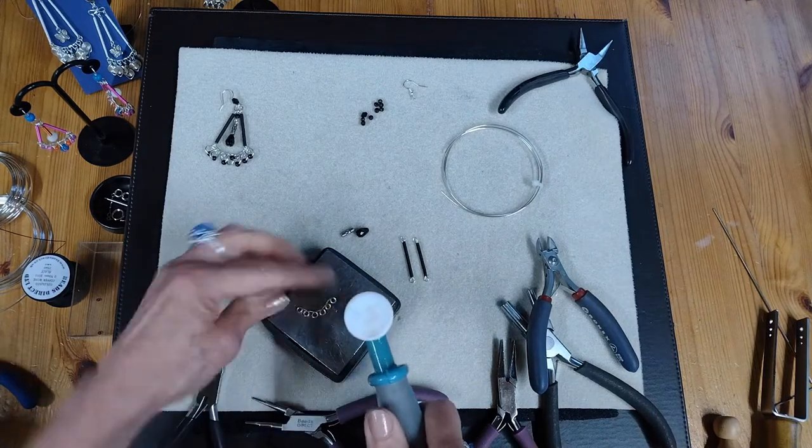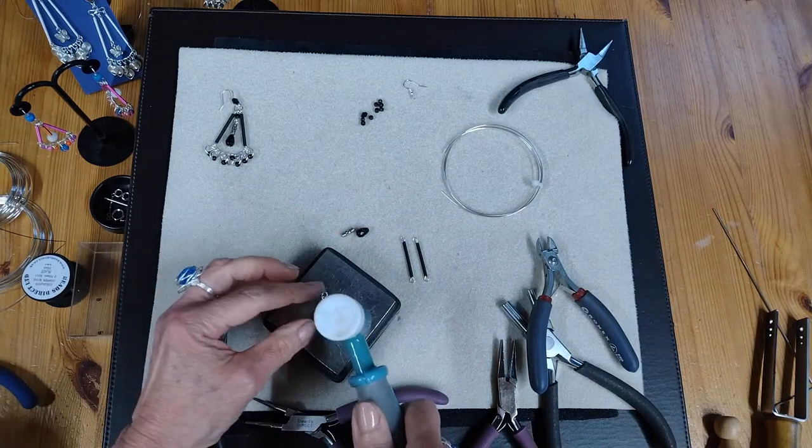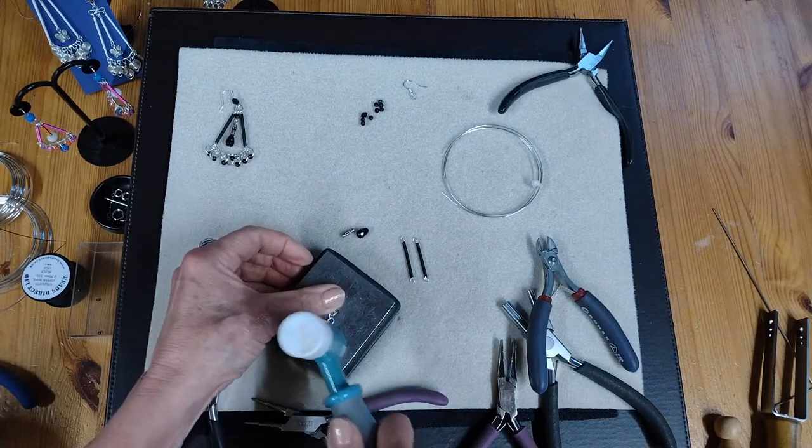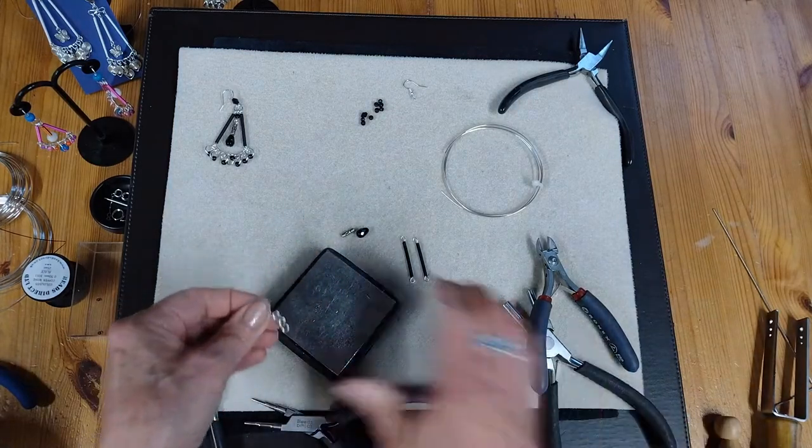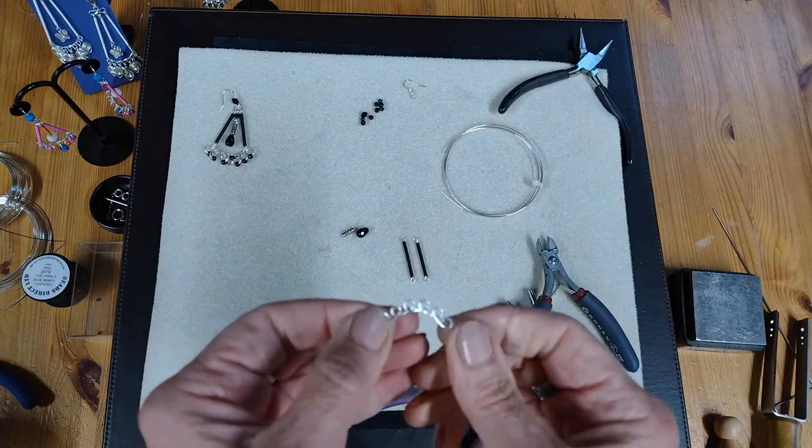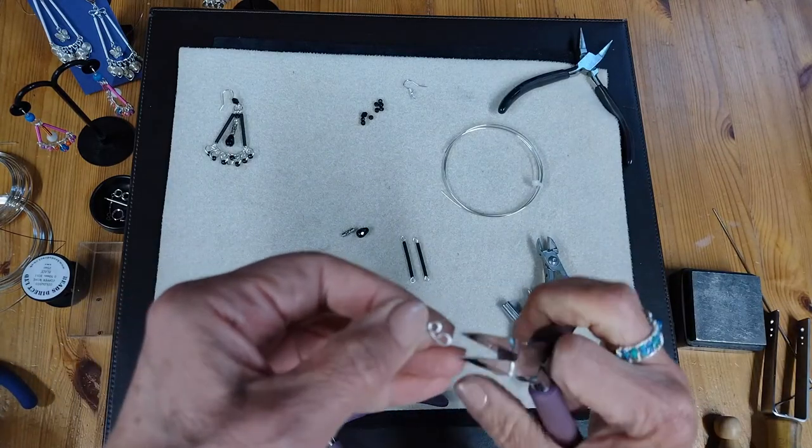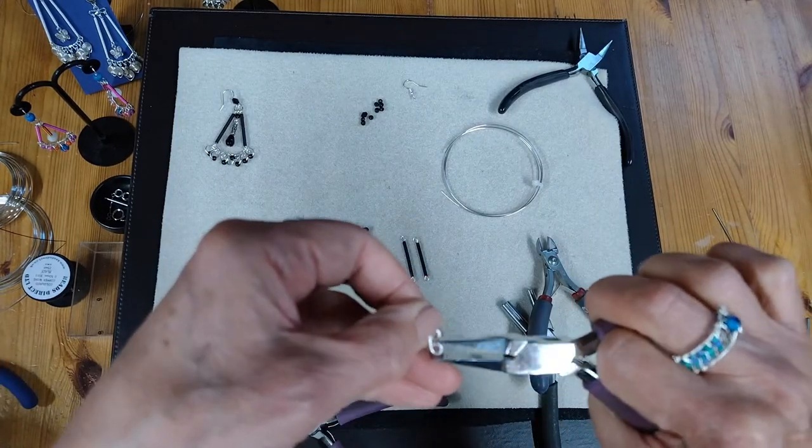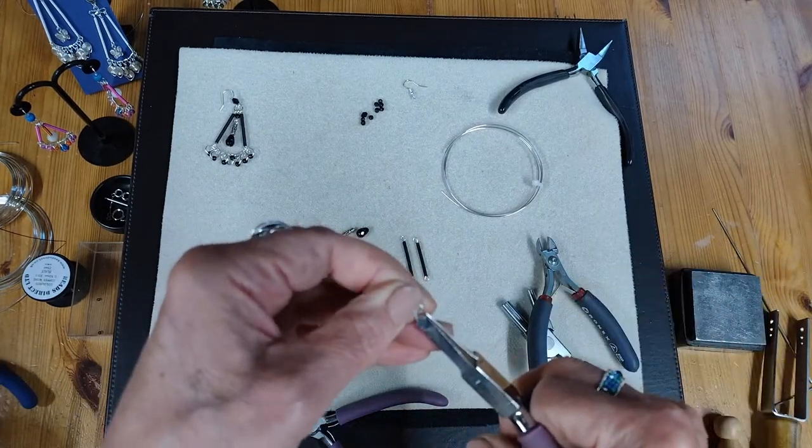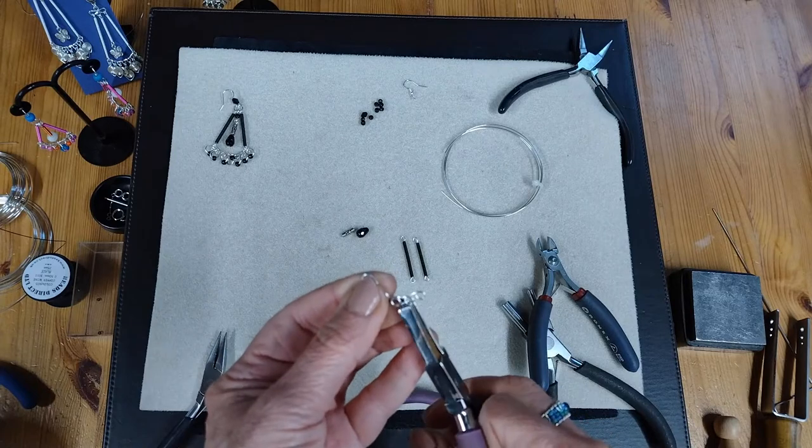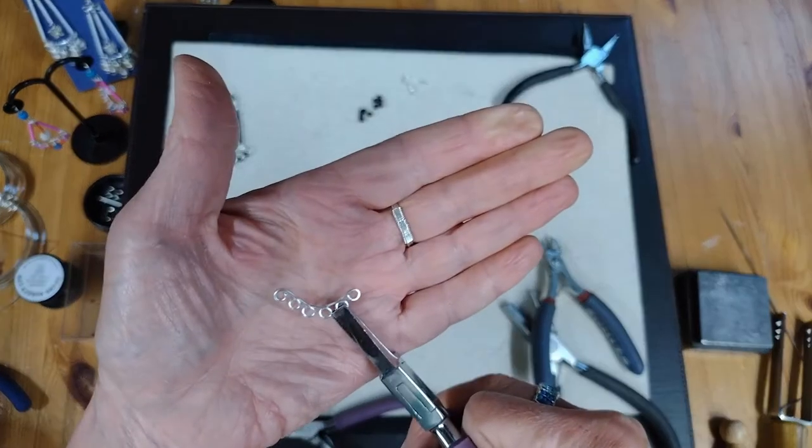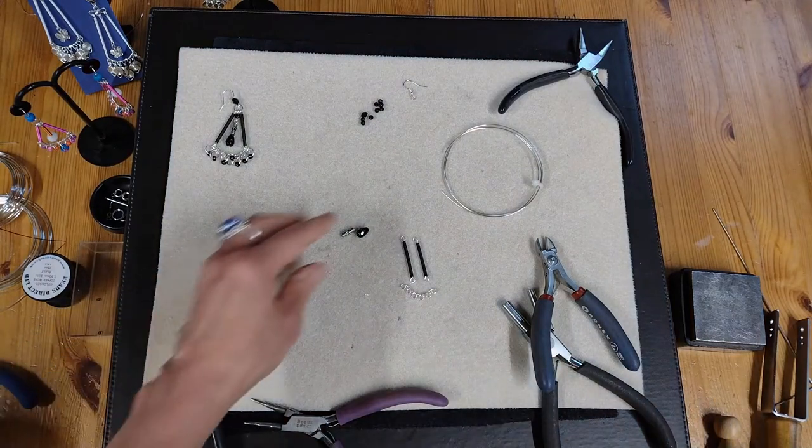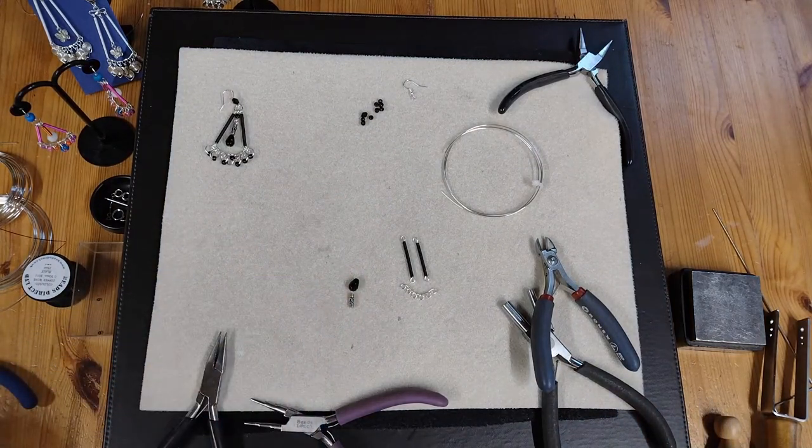And then just get your planishing hammer, the steel end, and just gently, very gently tap it. That will work harden it and fix it. Don't hammer it hard because you don't want to weaken it. Just make sure that those ends are completely closed and there's no opening at either end and that it's flat and your unit is secure. So there's how you make those end pieces.